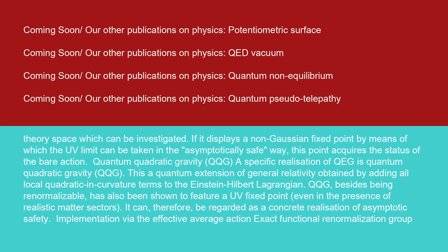Quantum quadratic gravity QQG: a specific realization of QEG is quantum quadratic gravity QQG. This is a quantum extension of general relativity obtained by adding all local quadratic curvature terms to the Einstein-Hilbert Lagrangian. QQG, besides being renormalizable, has also been shown to feature a UV fixed point, even in the presence of realistic matter sectors. It can therefore be regarded as a concrete realization of asymptotic safety.